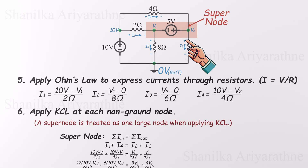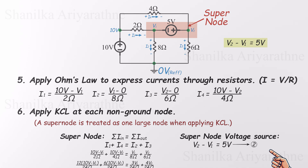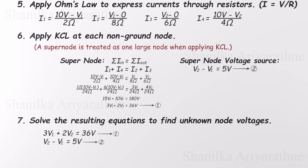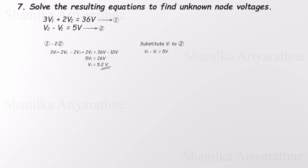The voltage source connecting V1 and V2 gives us a second equation, since we know the voltage difference across it: V2 − V1 = 5 volts. Now we have two equations with two unknowns. Multiplying the second equation by 2 and subtracting from equation one eliminates V2, giving us V1 = 5.2 volts. Plugging back in gives V2 = 10.2 volts.